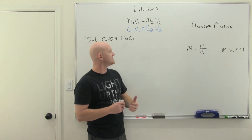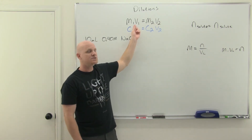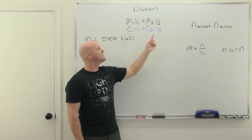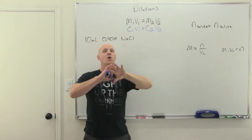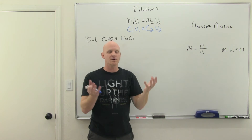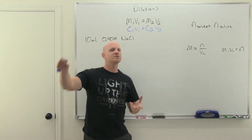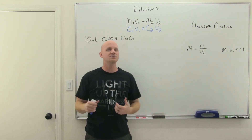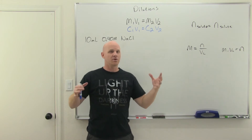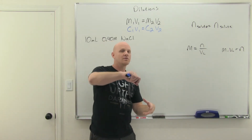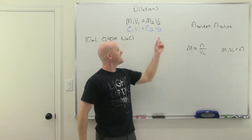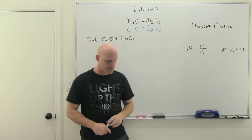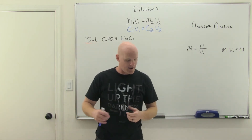One last thing: V1 is your initial volume, V2 is your final volume. What you need to remember about V2 is that it is the total volume of solution — not how much more solvent you added, but the total volume: the original amount of solution plus the amount of solvent added combined.